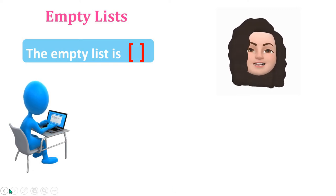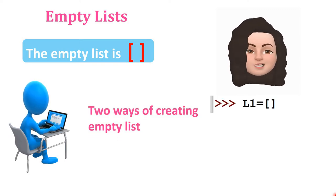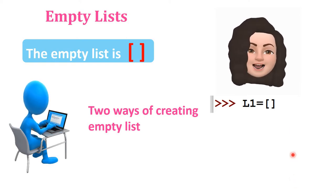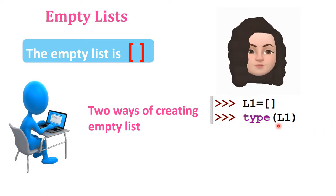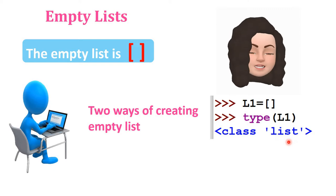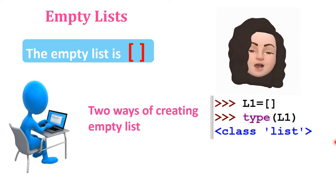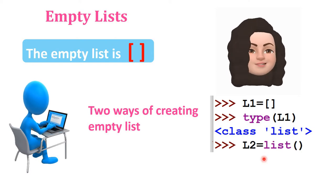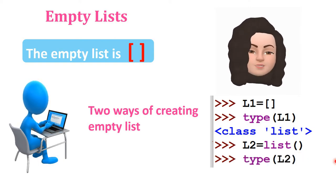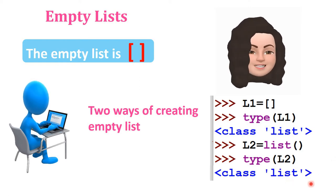There are two ways to create an empty list in Python. The first is to assign any variable equal to empty square brackets — for example, L1 = [] — and checking type(L1) displays 'list'. The second method is using the list function: L2 = list(), without passing anything inside the parenthesis. Checking type(L2) also gives 'list'. So an empty list is simply empty square brackets without any elements inside.